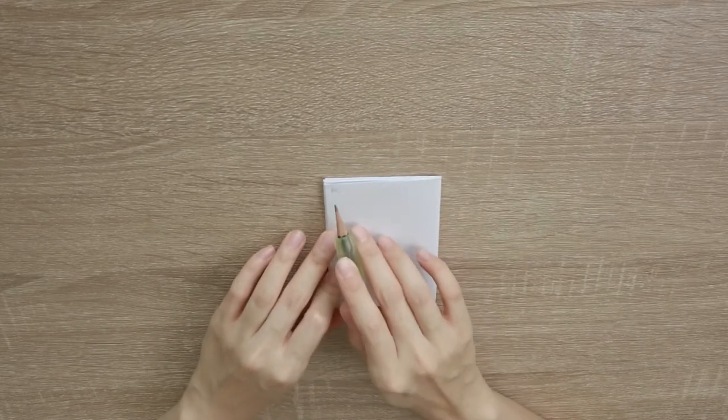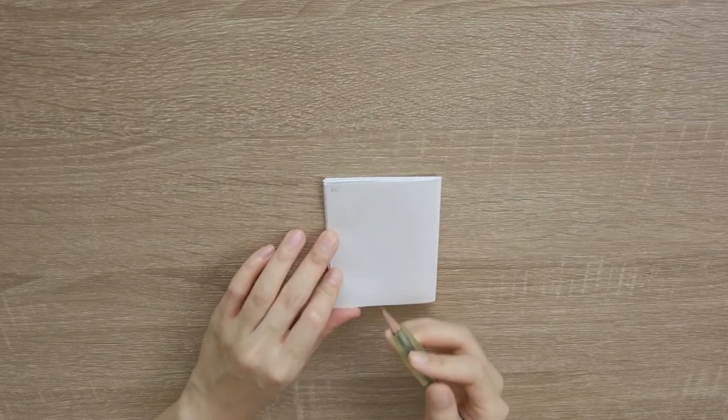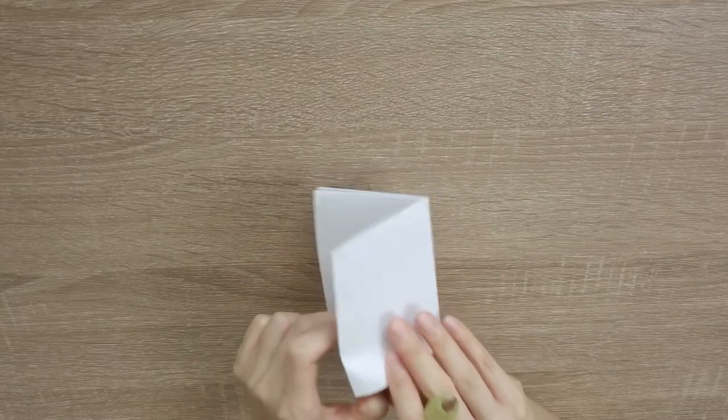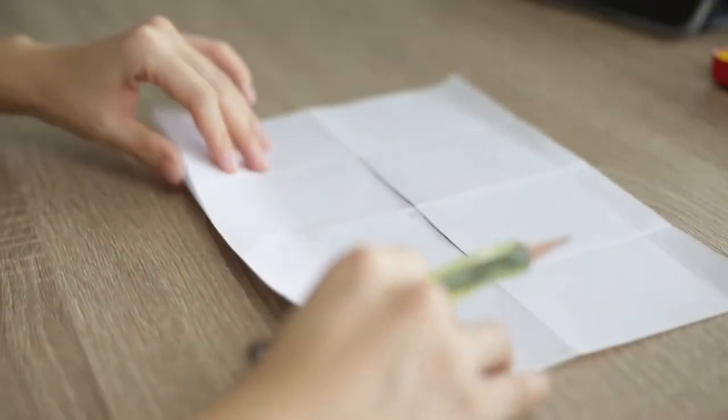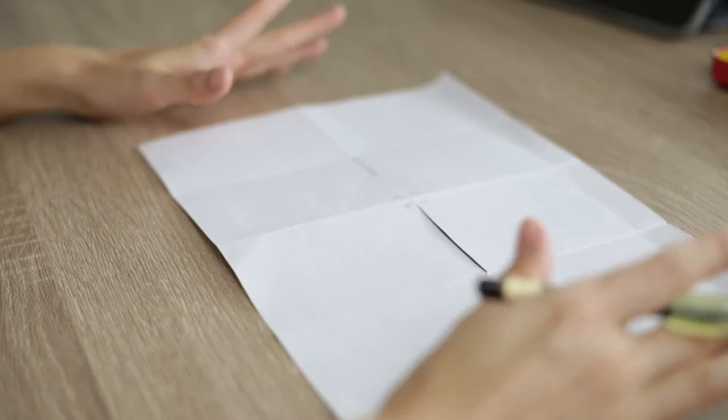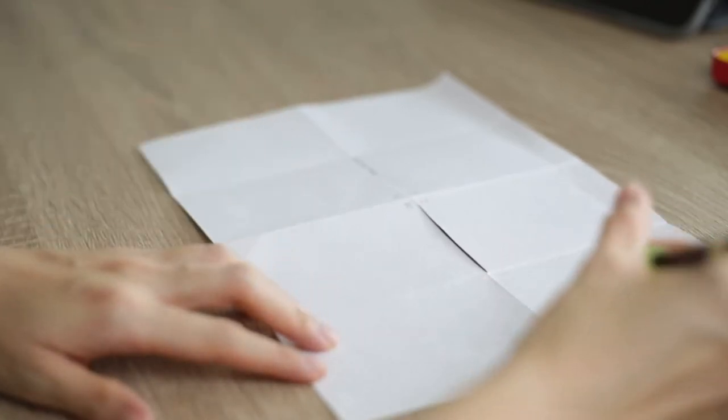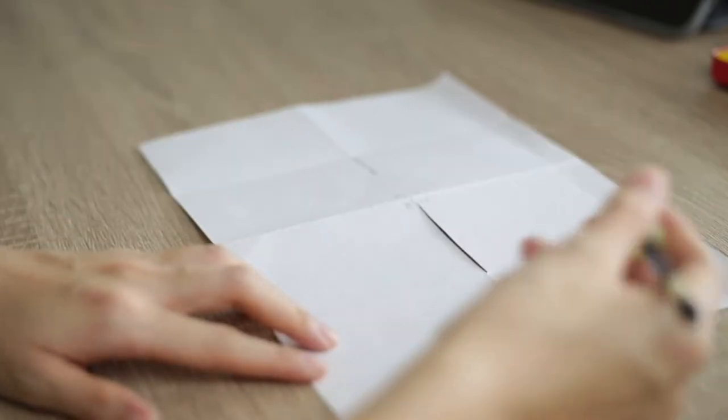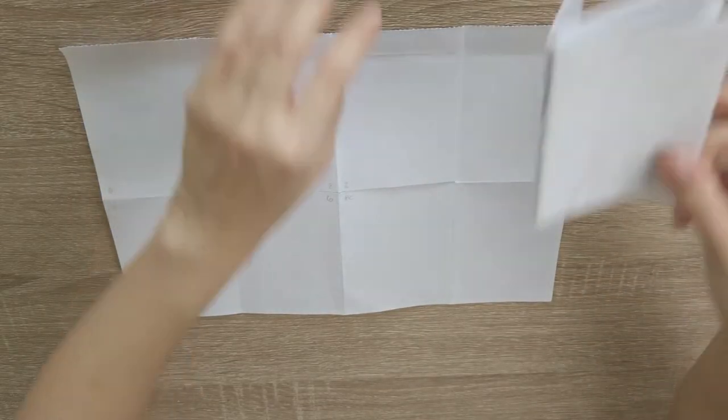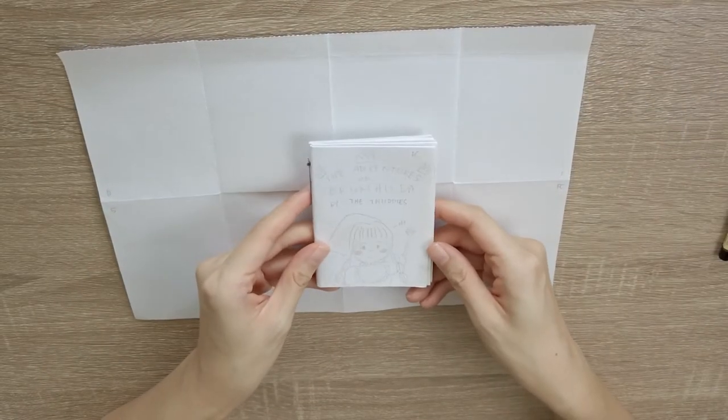And the reason why I do that and I label it according to the direction that it's going to be standing in is so that I can draw it with the page facing open. And depending on what direction the numbers are going in, I know that's the direction that I have to draw in.